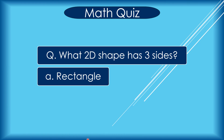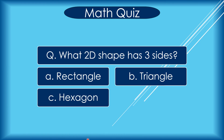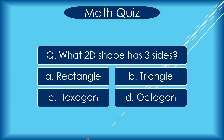What 2D shape has 3 sides? A rectangle, B triangle, C hexagon, D octagon. Correct answer is B triangle.